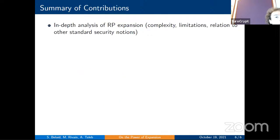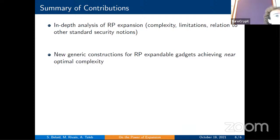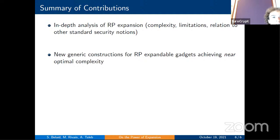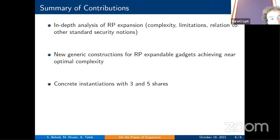In summary, contributions include: an in-depth analysis of the random probing expansion strategy in terms of complexity bounds, limitations, and relations to other security notions like strong non-interference and probing security; new generic constructions for expandable secure gadgets achieving near-optimal complexity; and concrete instantiations using three-share and five-share constructions with full gadgets and complexity values provided.